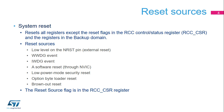The first type of reset is the system reset, which resets all the registers except the reset flags in the RCC CSR register. It also does not reset the backup domain. The system reset sources are: the external reset generated by a low level on the NRST pin, a window watchdog event, an independent watchdog event, a software event through the nested vectored interrupt controller, a low-power mode security reset generated when stop, standby, or shutdown mode is entered but is prohibited by the option byte configuration, an option byte loader reset, and a brownout reset.